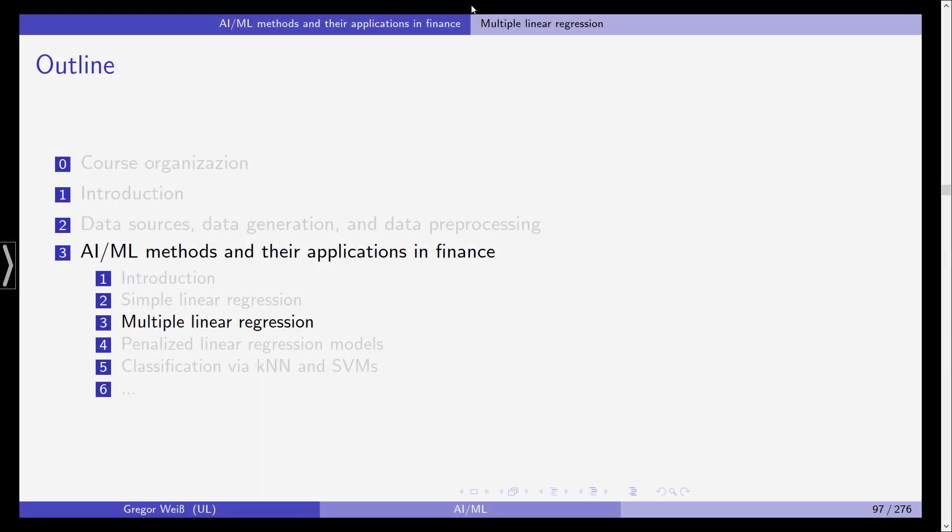Hello everyone and welcome back to our class in artificial intelligence and machine learning in finance. We are now at chapter 3.3 in which we want to discuss multiple linear regression. We've seen in the previous videos simple linear regression in which we use a simple line to predict a response variable based on one predictor.